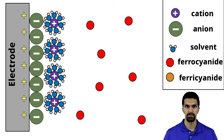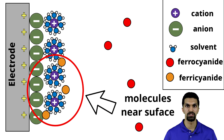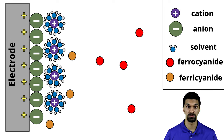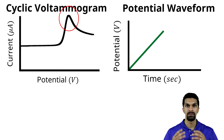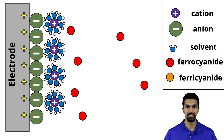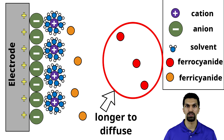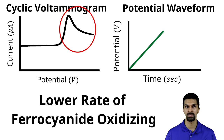Diffusion is the random motion of molecules — it is the mode of mass transport, or the way that a ferocyanide molecule moves around in solution. For an electron transfer to occur, a ferocyanide molecule must be sufficiently close to the electrode surface. That's easy if you're already close, but if you're farther away, it takes longer to diffuse towards the electrode. We observe a peak current associated with the maximum number of ferocyanide molecules oxidizing per second. Eventually, we start to deplete the ferocyanide molecules near the electrode surface, so it takes longer for a ferocyanide molecule to diffuse and oxidize, and we observe a decay in the current — fewer ferocyanide molecules oxidizing per second.